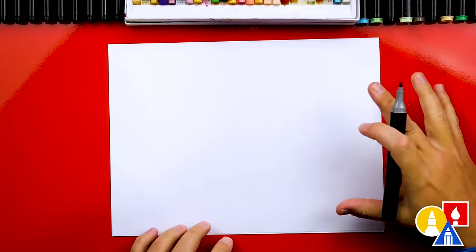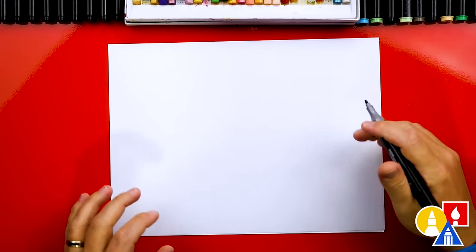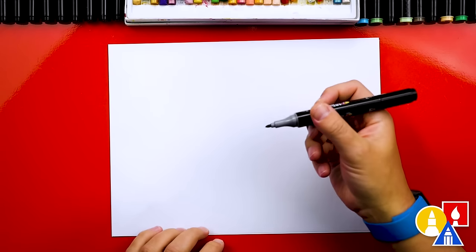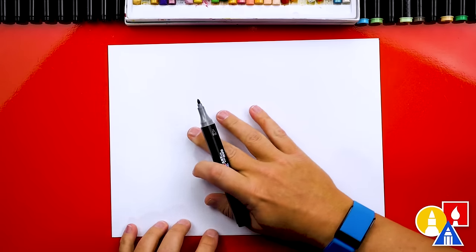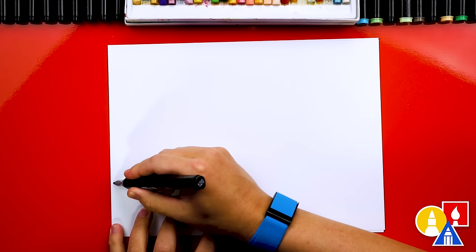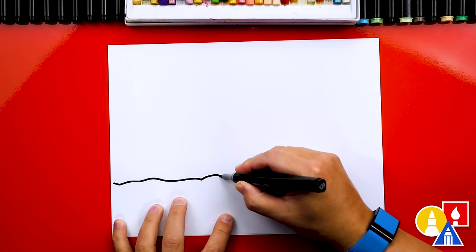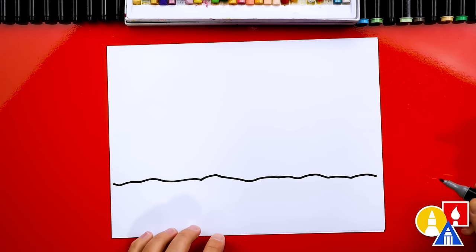I have my paper horizontal so that we have room to draw the whole Jeep and we're gonna draw a side view. I'm also using my markers to draw with, but you can use whatever you have at home or in the classroom. I'm using marker paper because I'm using a marker to draw with. First, let's draw the ground and I'm gonna draw a bumpy line so it looks like our Jeep is off-road.